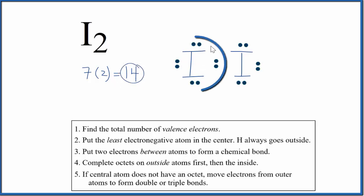That's how many we had. This iodine has eight, and this iodine has eight, and they're sharing these two in a covalent bond between the two iodine atoms.